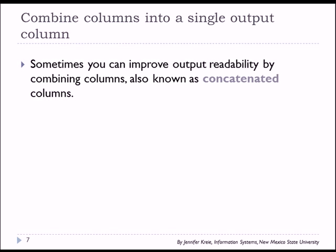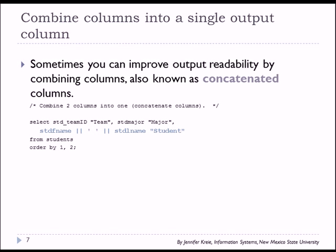Sometimes you want to combine columns into a single column. This probably comes up most often when you're dealing with people's names. This is called a concatenated column. We're going to combine the first and last name of students and put it in a single column called student. We've listed team ID with a column alias, major, student major with a column alias, and we're doing student first name followed by two pipes.